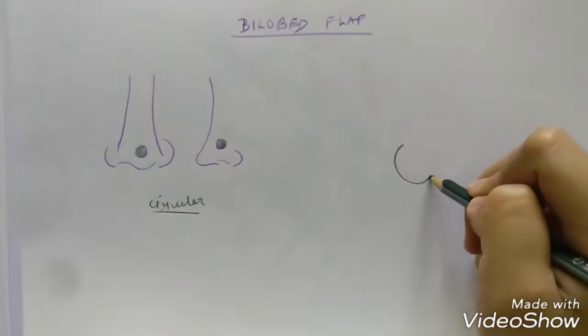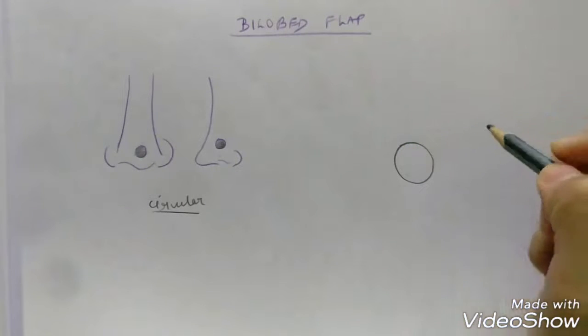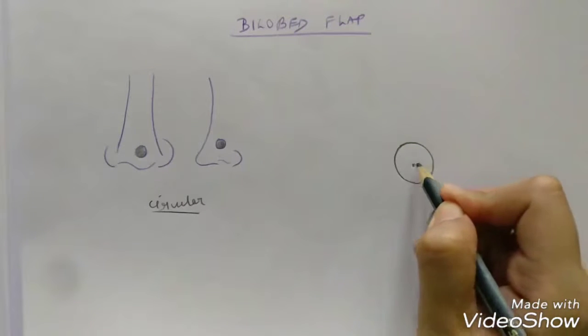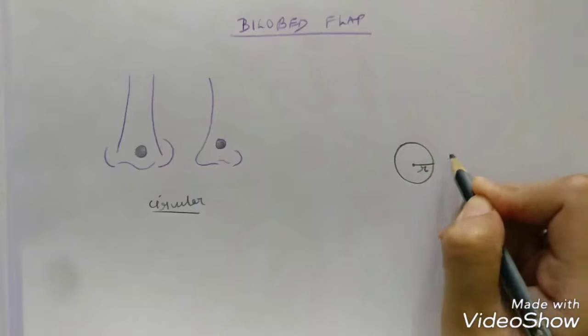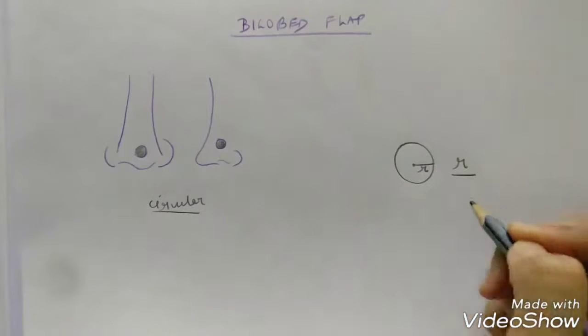The defect that is circular in shape is first marked and it is important to first know what is the radius of the defect. The radius will help us mark the remaining parts of the flap.